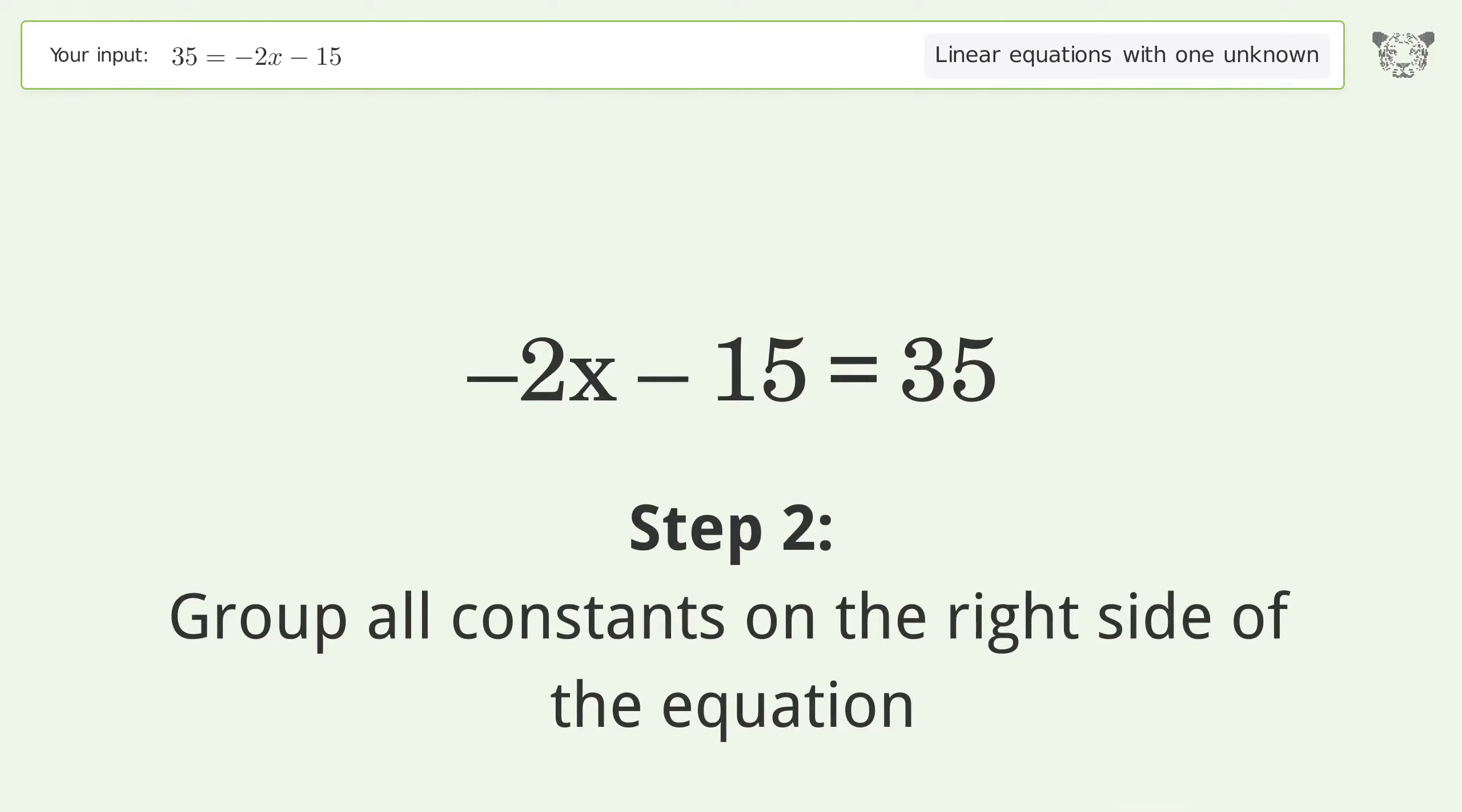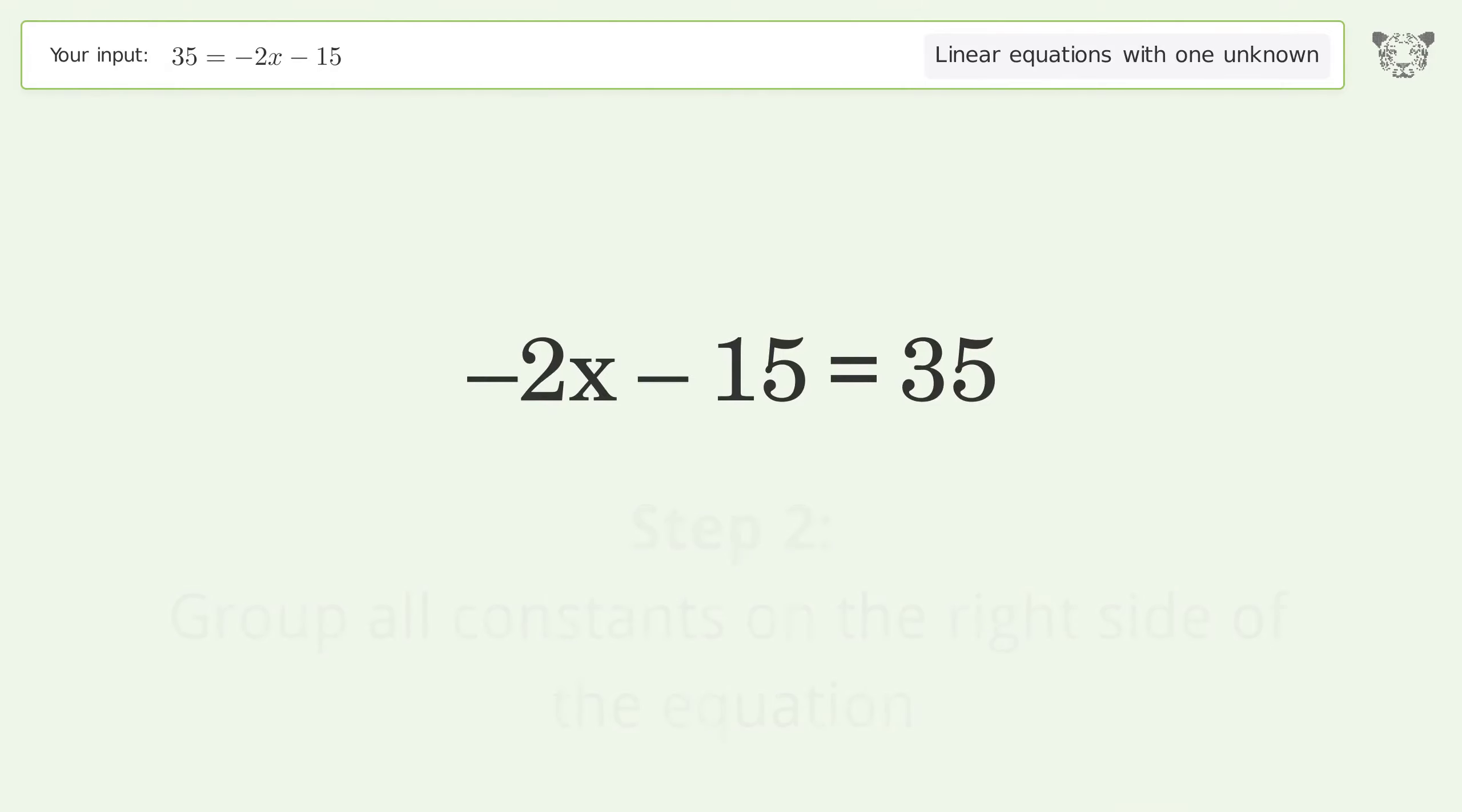Group all constants on the right side of the equation. Add 15 to both sides. Simplify the arithmetic.